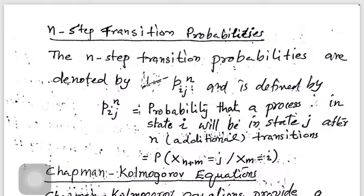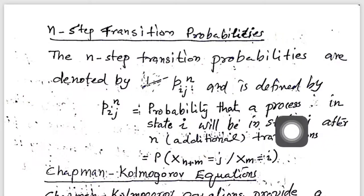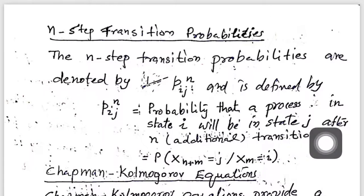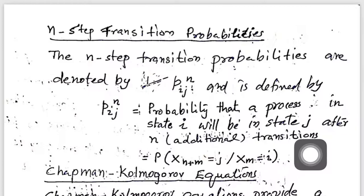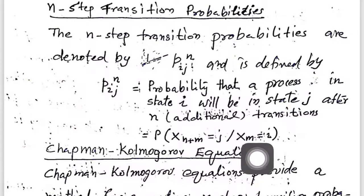Here we define n-step transition probabilities. N-step transition probabilities are the probability of starting from state i and the process going to state j in exactly n steps. So P_ij^(n) represents the probability that the process starts from i and goes to j in exactly n steps.